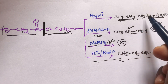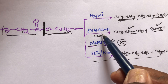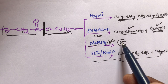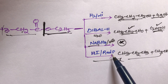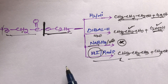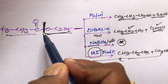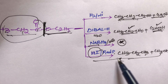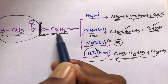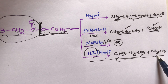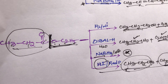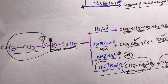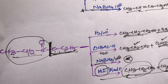Summary: ester reacts with H2/Ni → gives alcohols; ester reacts with DIBAL → gives aldehyde and alcohol; sodium borohydride cannot reduce esters; HI with red phosphorus is a strong reducer and reduces esters to hydrocarbons. These are the important reducing agents. If you like the video, please like, share, and comment. Thanks for watching!